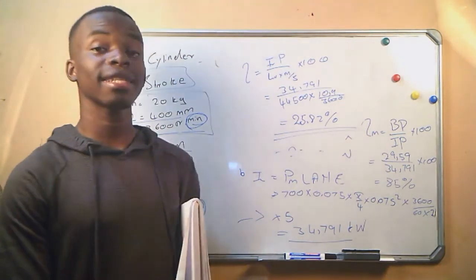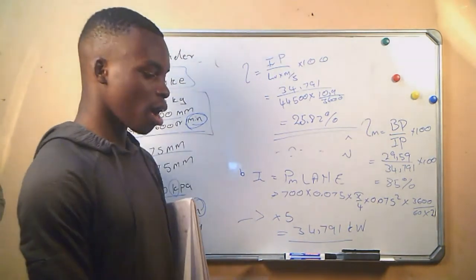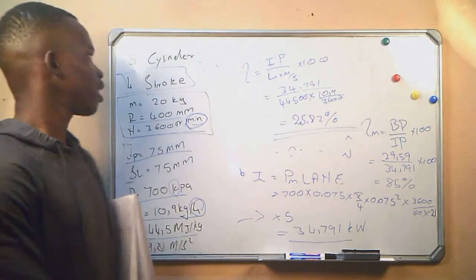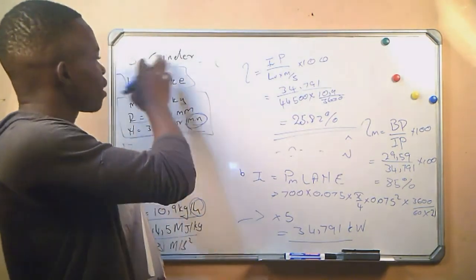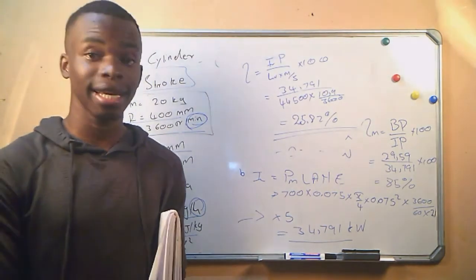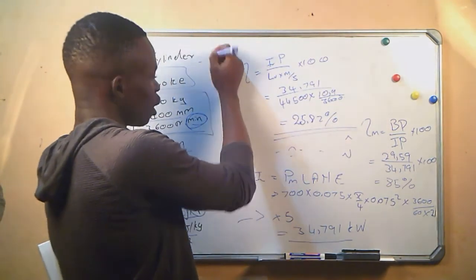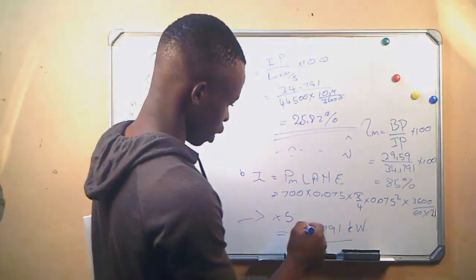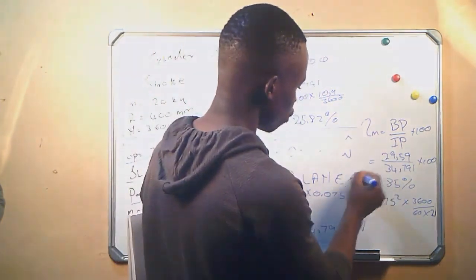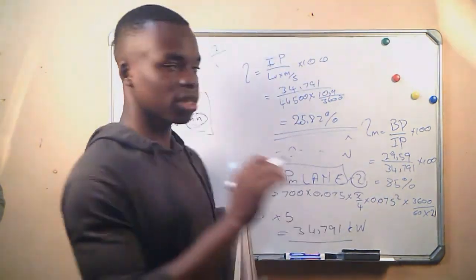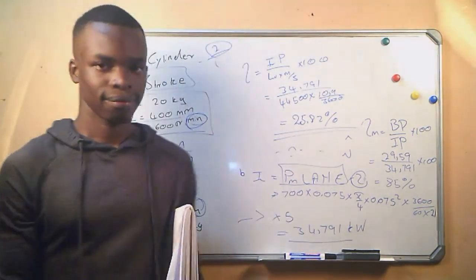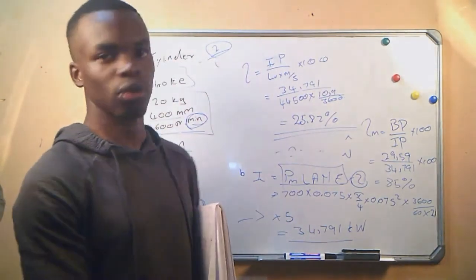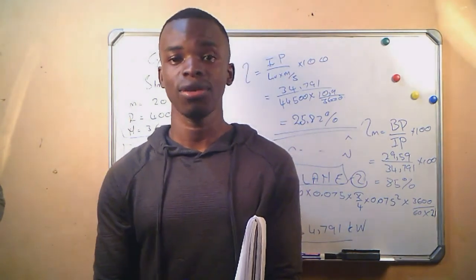And if you get a question where they say the engine is, let's say, five cylinder, four stroke, double acting, if they say it's double acting, when you get to this formula, you are going to say times two because it's double acting. And that is basically how we go about answering this particular question. It's the end of our lesson today. I will see you on the next lesson.